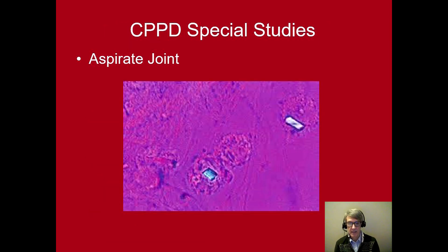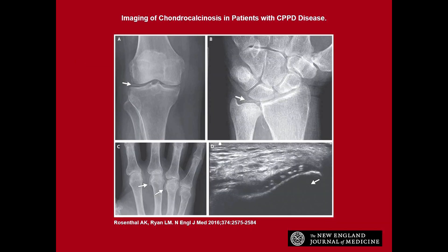Currently there are no diagnostic criteria published by the American College of Rheumatology. However, one very important criterion is visualization of crystals on polarized light microscopy — calcium pyrophosphate crystals are weakly positively birefringent and rhomboid, appearing blue in the plane of the polarizer and yellow when perpendicular. X-ray is also helpful: one can see calcium in the joint on the knee, in the triangular cartilage of the wrist, and osteoarthritis in unusual locations such as the metacarpophalangeal joints with osteophytes. Ultrasound can also demonstrate calcium deposited in the cartilage.